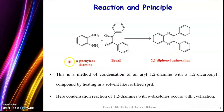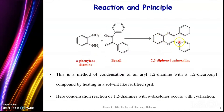We are going to take 2 different solutions — one will be orthophenylenediamine in alcohol and the second one will be benzyl in alcohol. We will mix both of these solutions and heat on a water bath for about 30 minutes, and due to the condensation and simultaneous cyclization that is happening, we are going to get a final compound which is 2,3-diphenyl quinoxaline.